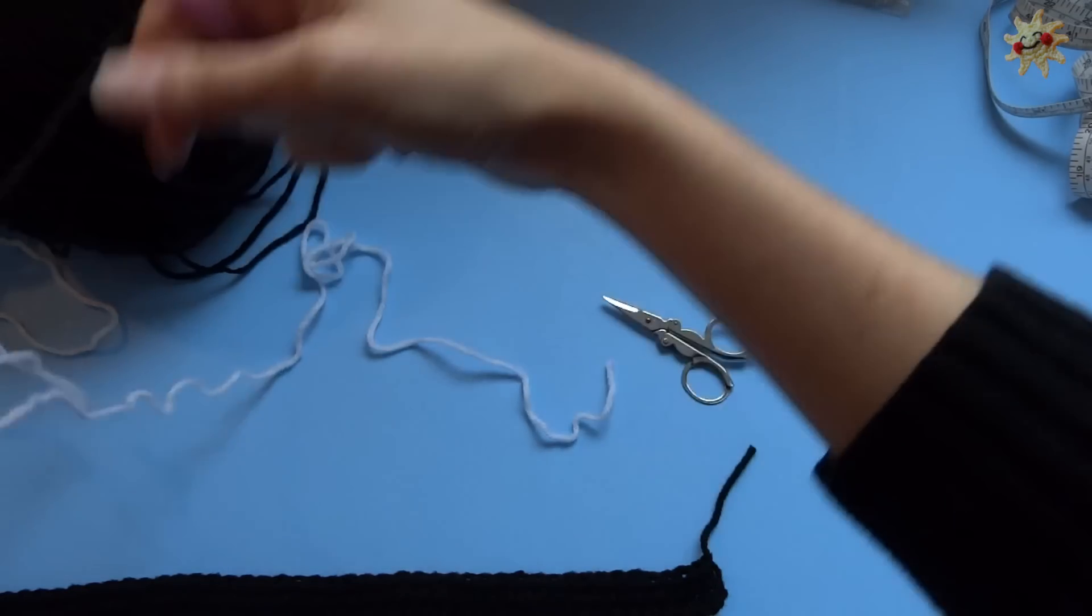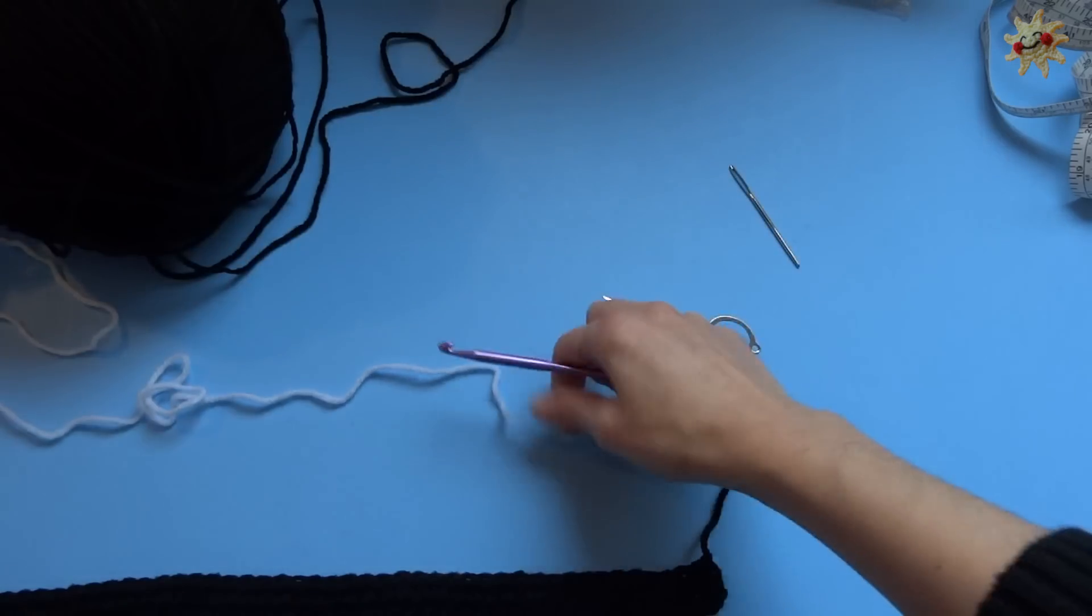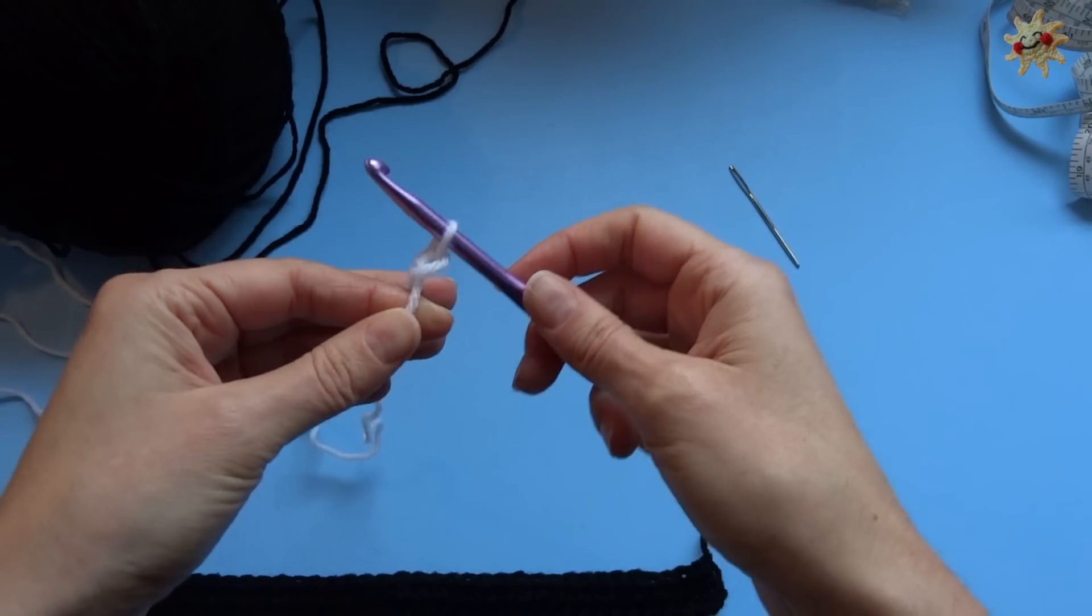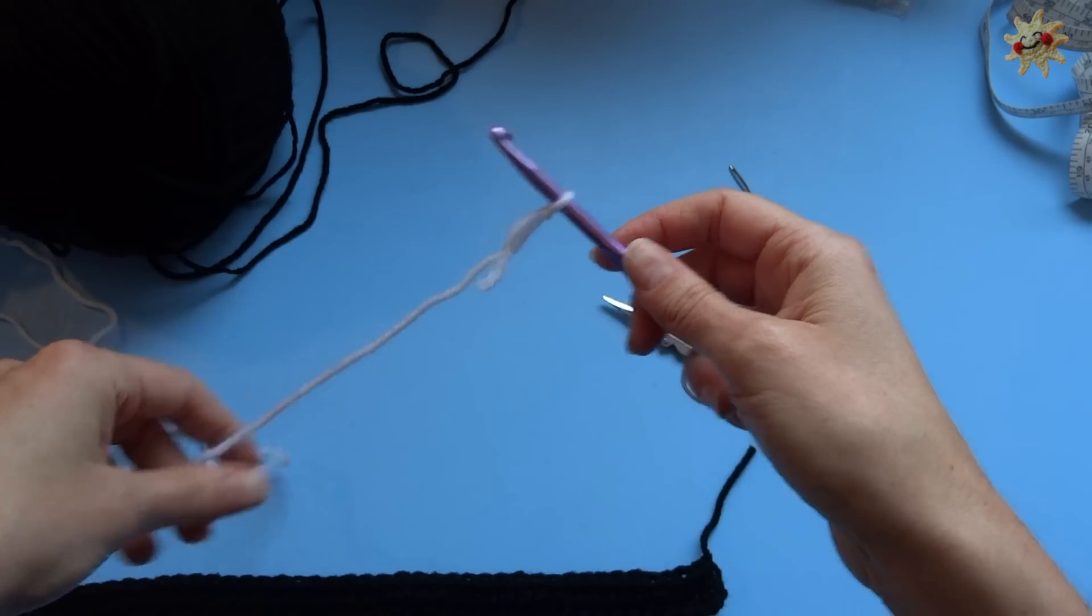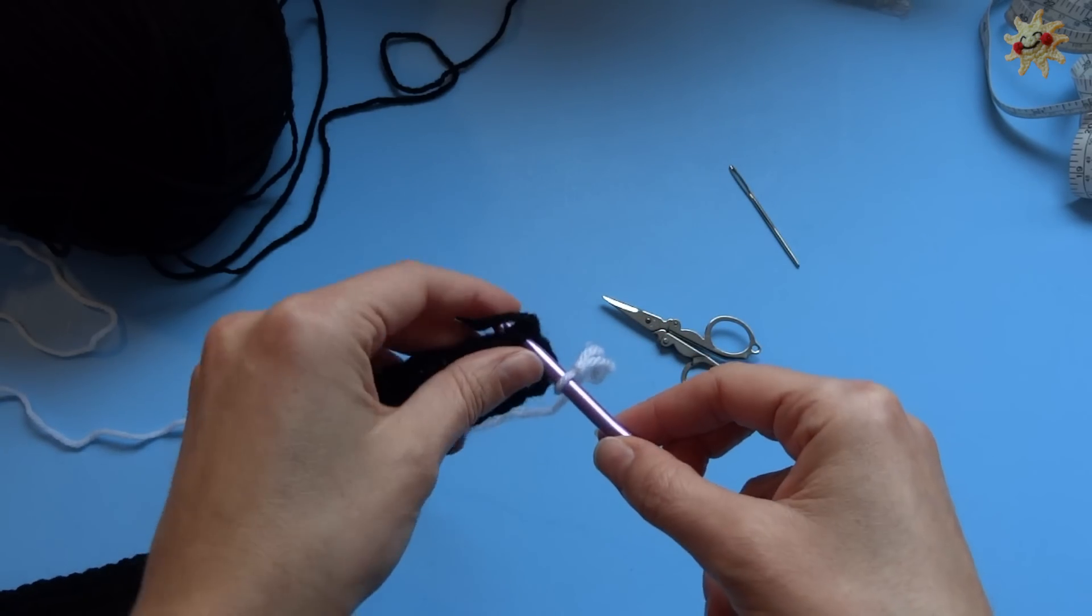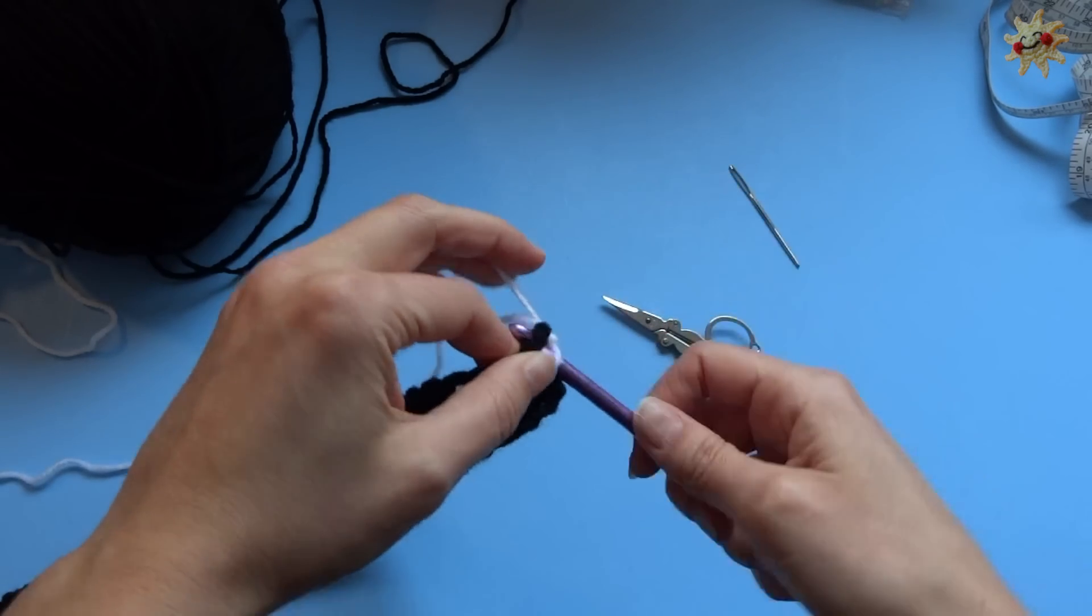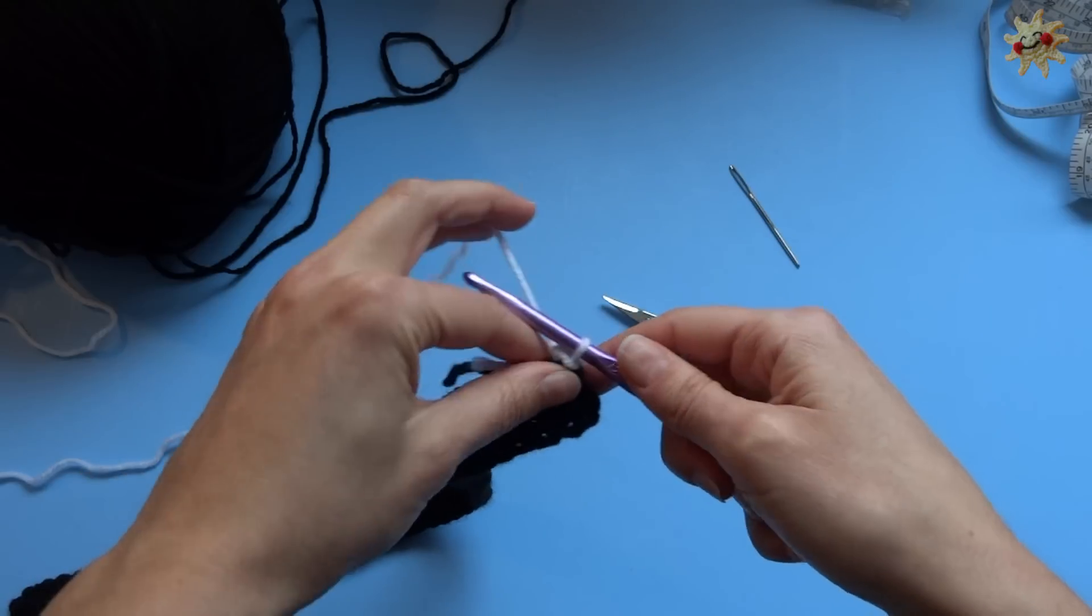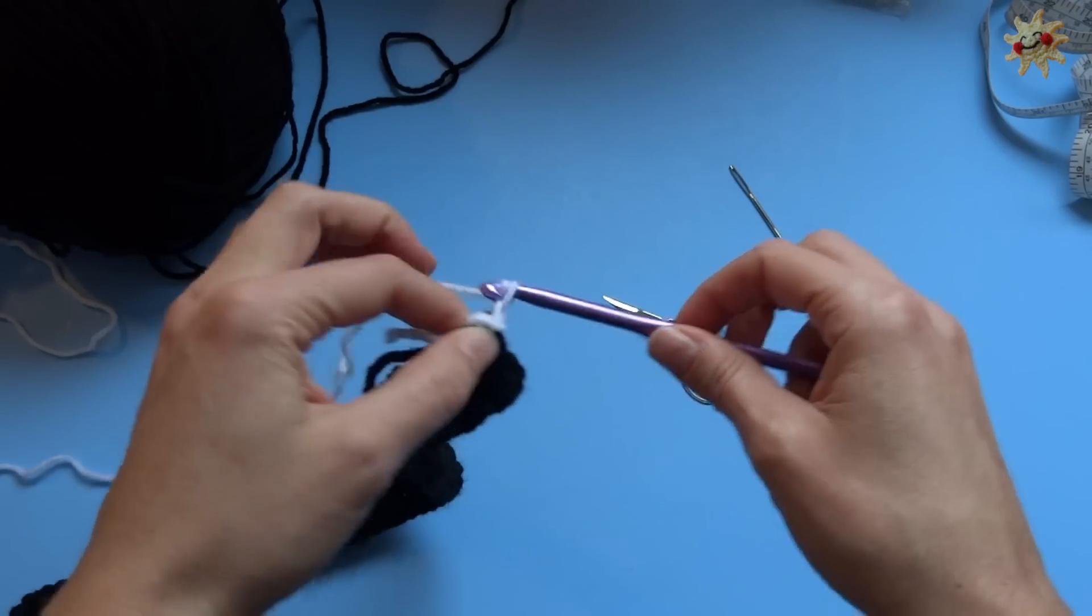I'm going to get my white going here, get the black out of the way. I don't want anything to get tangled. We're going to join it with a slip stitch. So you make a slip knot on your hook and you're going to join in that first stitch with a slip stitch. And you're going to chain two. One, two.